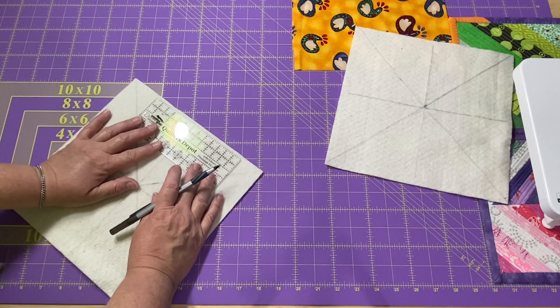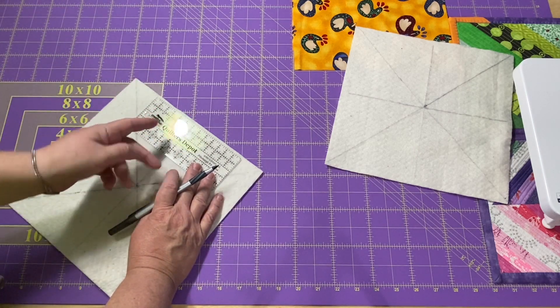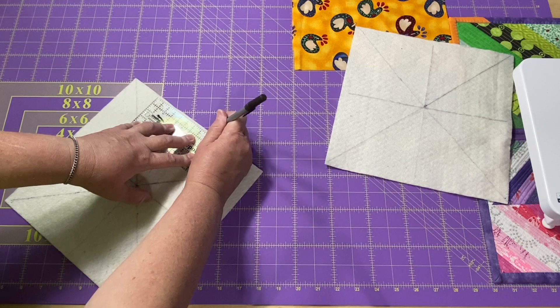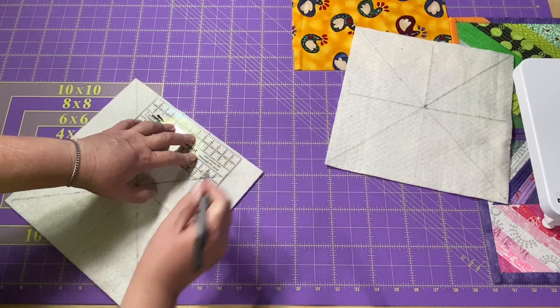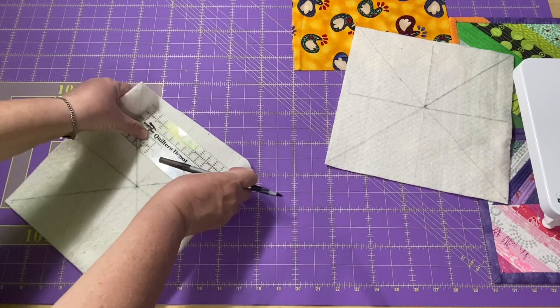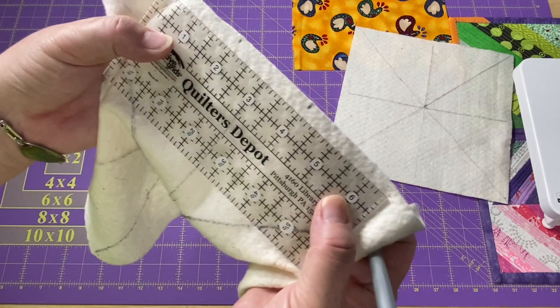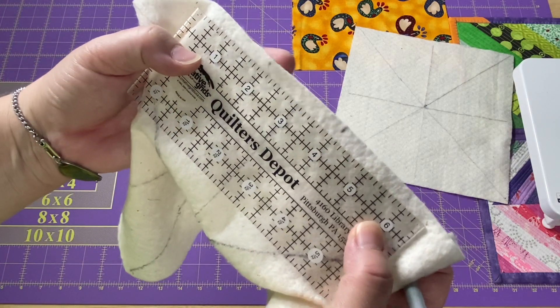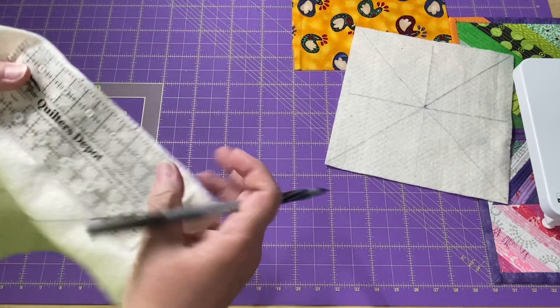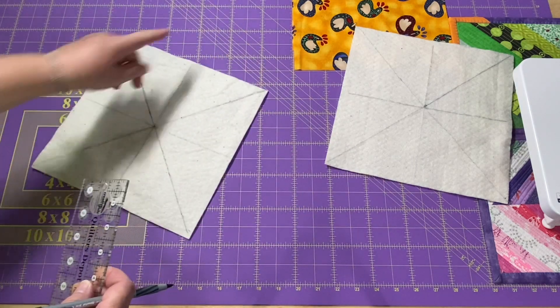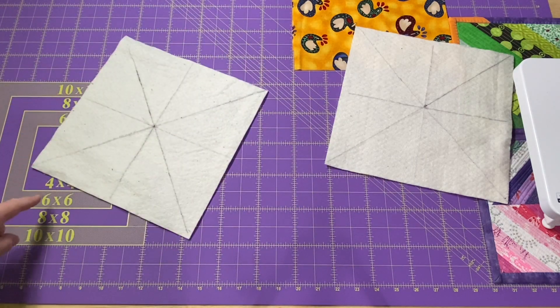So you can line it up wherever you want. Put an inch right on that line. I have 3 inches on mine, so I will mark it 4 inches and 2 inches, just so that it is 1 inch on either side of that drawn line. And you're going to repeat that on all of your cross markings.